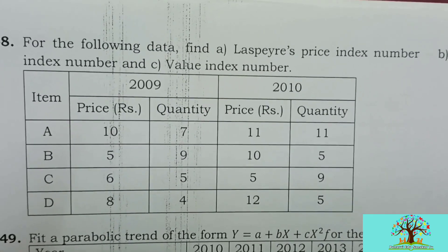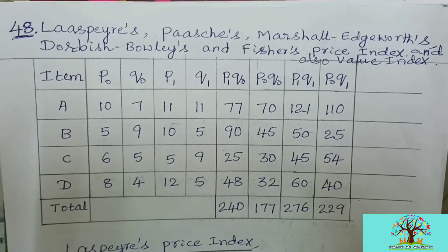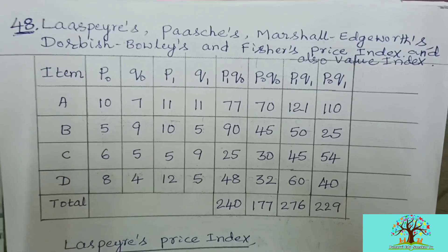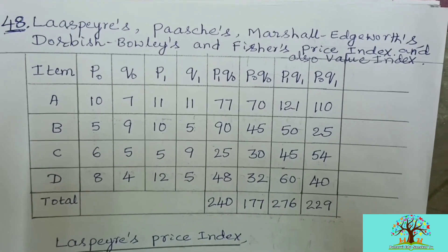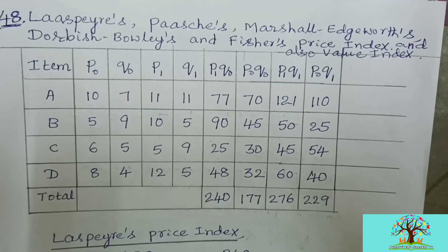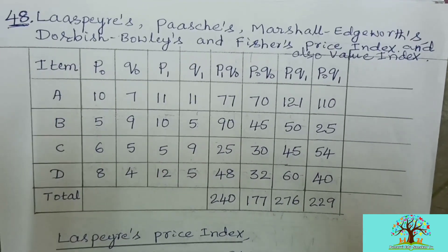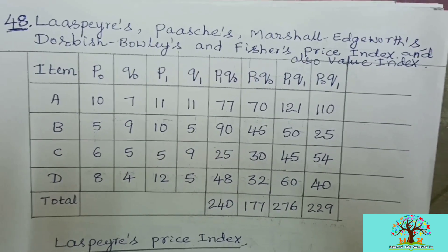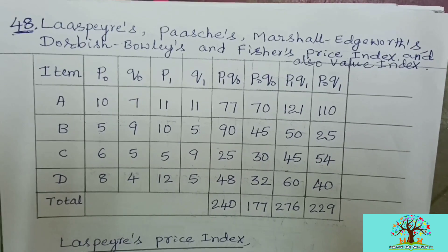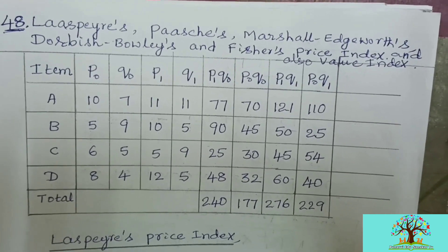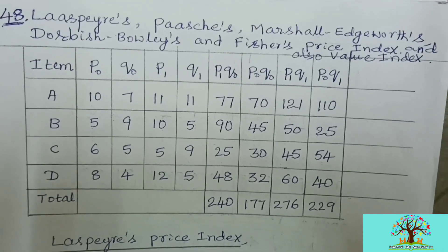We are calculating Laspeyre's, Paasche's, Marshall-Edgeworth, Dorbish-Bowley, Fisher's price index, and value index. At the end, we'll also do Paasche's quantity index number. The same table you have done already in the 47th question to calculate Fisher's index number and prove TRT and FRT - the same type of table you have to do here.